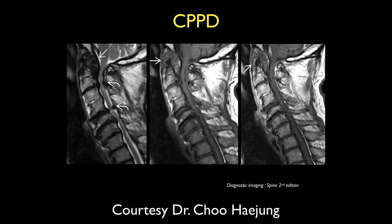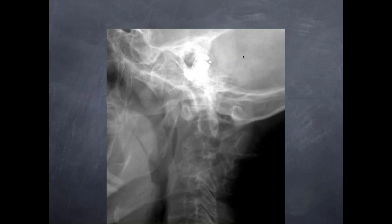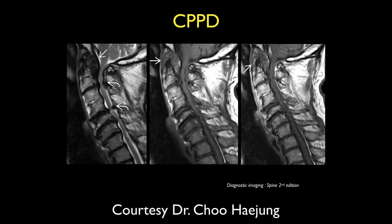Here's another example with calcifications. When a lot of soft tissue like this calcifies, it's also called crown dens syndrome. There are a lot of names for this, and it's not clear whether these are different diseases. The bottom line is that this can compress the cord, and you have to think about anything that can produce chronic soft tissue thickening that then becomes calcified in this area.